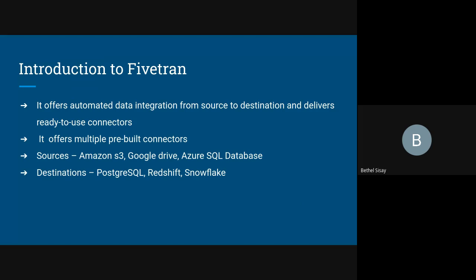Next we'll take a look at a tool called Fivetran. If you're not familiar with Fivetran, what it essentially does is automate data movement from your sources to your destination. Data needs to be extracted from sources and converted into a more useful form for analysis — you basically don't want to write an entire pipeline from scratch to read your data, create a connection, and write it to the destination.